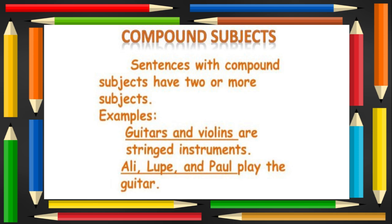Sentences with compound subjects have two or more subjects. What are compound subjects again? Sentences with compound subjects have two or more subjects. Let's look at a few examples. 'Guitars and violins are stringed instruments.' 'Ali, Lupe, and Paul play the guitar.' 'Guitars and violins' is the compound subject. 'Ali, Lupe, and Paul' is the compound subject.